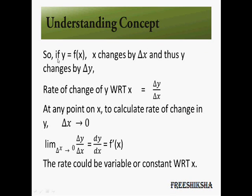To answer that, consider y as a function of x. If x changes by delta x and y changes by delta y, the rate of change of y with respect to x is delta y over delta x. At any particular value of x, this rate may itself depend on x. To find the rate at a specific point, we let delta x tend to 0, giving us dy by dx — that is the definition of the derivative.